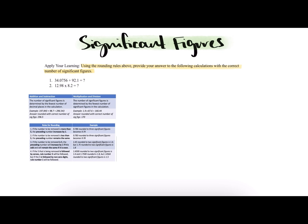Let's start with number one: 34.0756 plus 92.1 — remember to line up the decimal points — equals what? Based on our addition and subtraction significant figures rule, the number of significant figures in this problem will be determined by the fewest number of decimal places in the calculation.